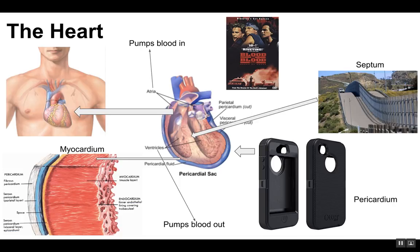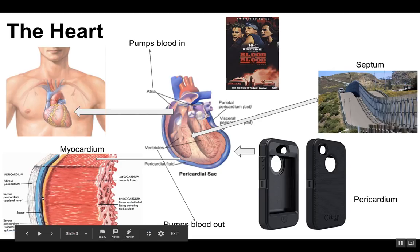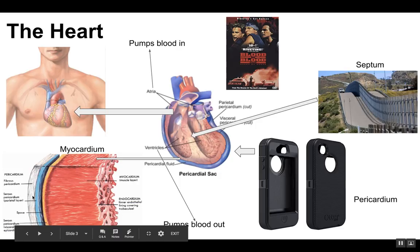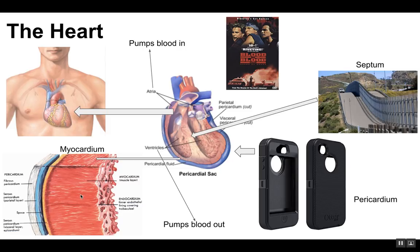The pericardium is the protective sac of tissue that encloses the heart — that's this area right here on the outside. The myocardium is the two layers in the walls of the heart that sandwich a thick layer of muscle that contracts to pump blood throughout the circulatory system. The pericardium is the outside; the myocardium is the inner wall that contracts and pumps blood in and out. On average, your heart contracts 72 times a minute, moving 70 milliliters of blood each contraction.